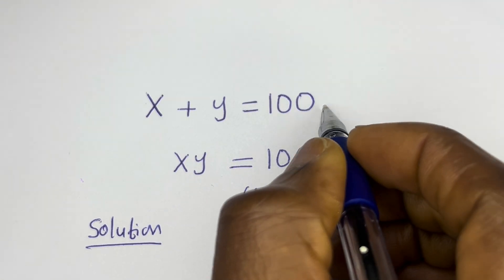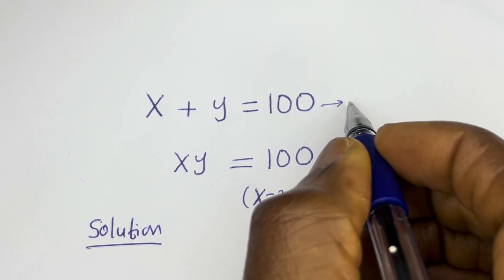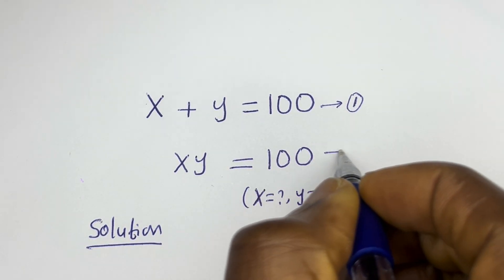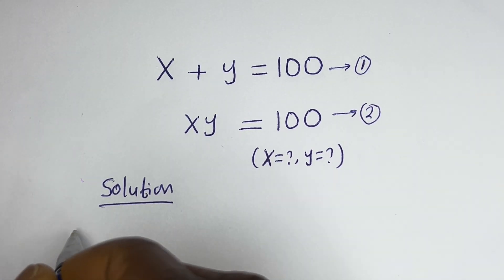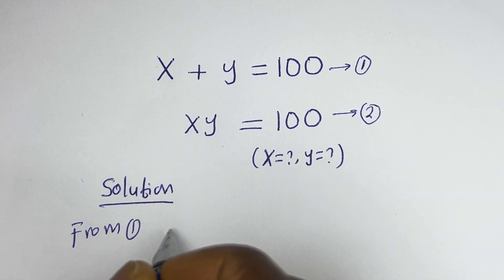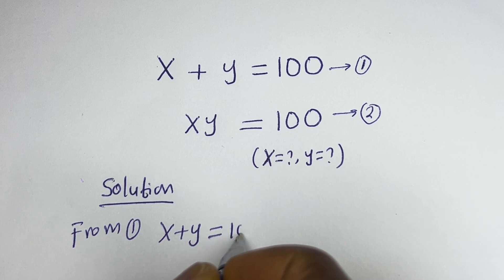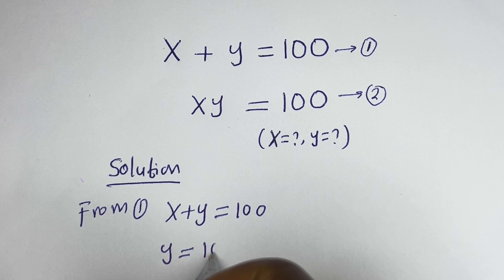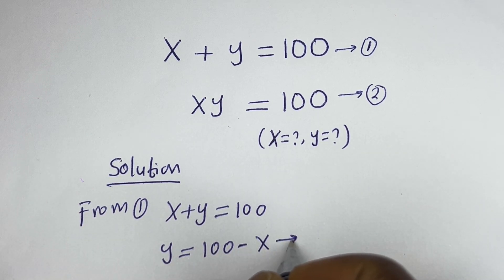x plus y is equal to 100 — let's call this equation 1. x times y is equal to 100 — let's call this equation 2. Then from equation 1, x plus y equals 100, so y is equal to 100 minus x. Let's call this equation 3.